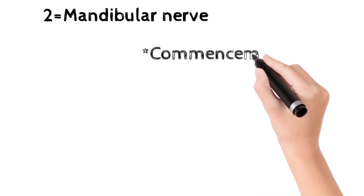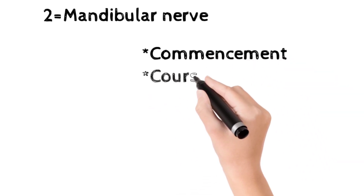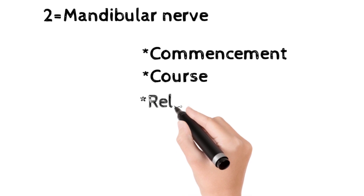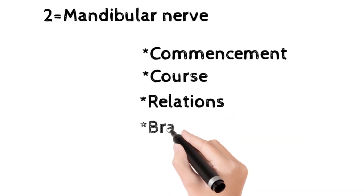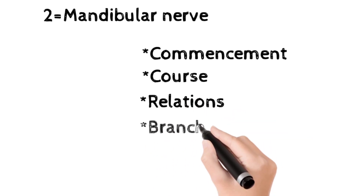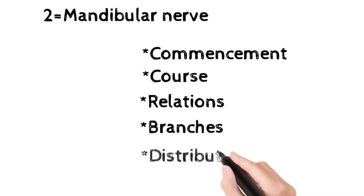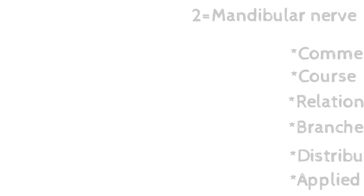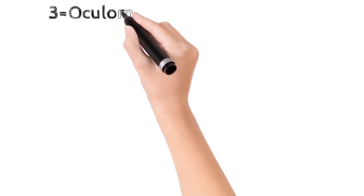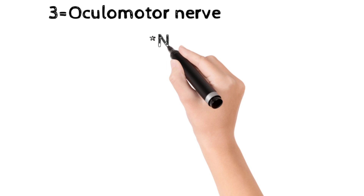The second important topic is the mandibular nerve. The subheadings are: commencement of mandibular nerve, course of mandibular nerve, relations, branches and distributions, and the applied anatomy.